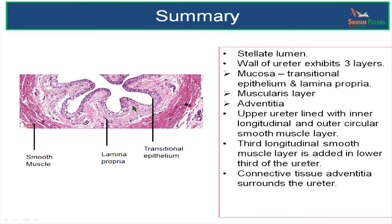We will now summarize what we have learnt in the microscopic anatomy of ureter. As you can see from the picture, all the layers in the wall of the ureter: the lumen is stellate or star-shaped, there are 3 layers in the wall — mucosa, muscular layer, and adventitia.